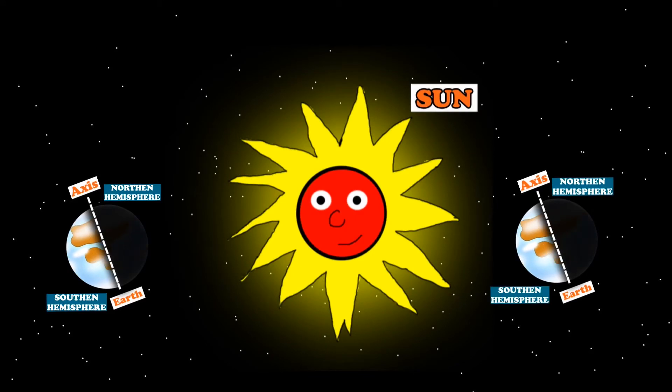At certain times of the year, the northern hemisphere will lean towards the sun and the southern hemisphere away from the sun. And at other times, the southern hemisphere will lean towards the sun while the northern hemisphere leans away. As the Earth keeps spinning, it creates a pattern. This pattern creates seasons.